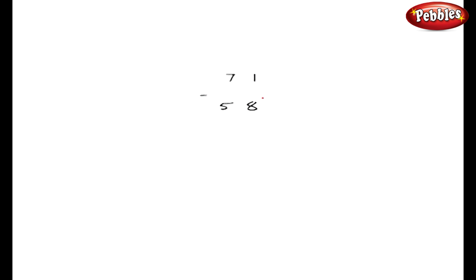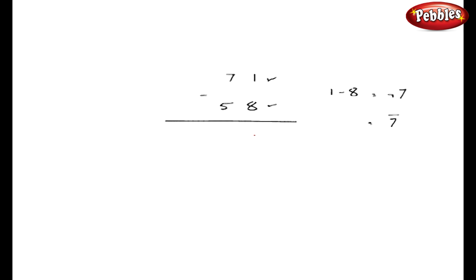Let us take one simple example: 71 minus 58. Try to avoid giving strokes every time — just give the strokes in your mind. As a first calculation, we have to do 1 minus 8. The answer is minus 7. This minus 7 is written as '7 bar' in Vedic mathematics. As a first step, I will write 7 bar here.